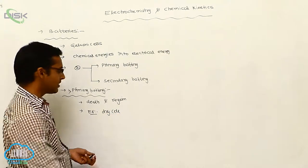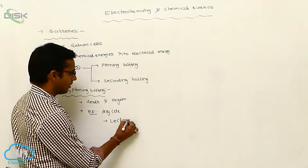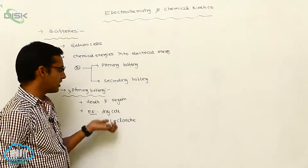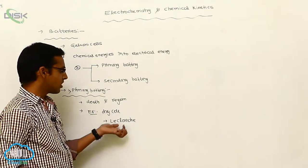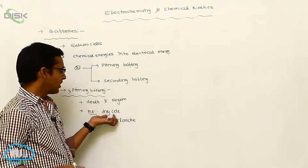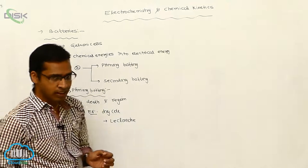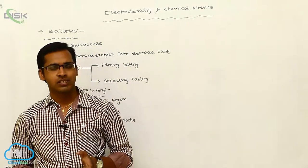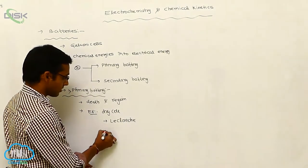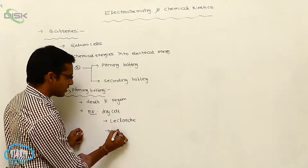A best example of a primary battery is the dry cell. The dry cell was discovered by Leclanché, and that is why the dry cell is also called the Leclanché cell. Primary batteries are commonly used in transistors and similar devices.